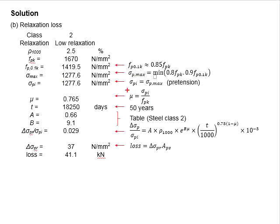The mu is determined by having this sigma_pi divided by its characteristic strength, which is 1670. And there is one more parameter, which is t here. It is said that the design life is 50 years, which converted into the total number of days will be 50 times 365. You will get this number.